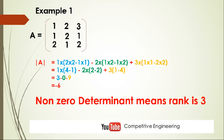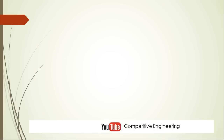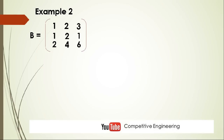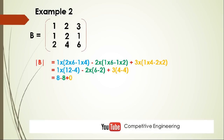Now let us try another example. Consider matrix B equal to [1, 2, 3; 1, 2, 1; 2, 4, 6]. We find the determinant of B and get 0. Since the determinant is zero, the rank of the matrix is not 3 — it may be 2 or 1.